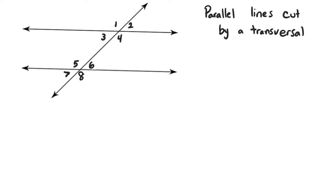What it means to be parallel is these lines can keep going forever and never touch each other. As long as they keep going straight, they will never touch each other — they are completely parallel. This distance will stay exactly the same the entire time. The transversal is the line that crosses those and it creates these intersections. What happens when you have a transversal going through parallel lines is you end up creating angles that are going to have relationships with one another.